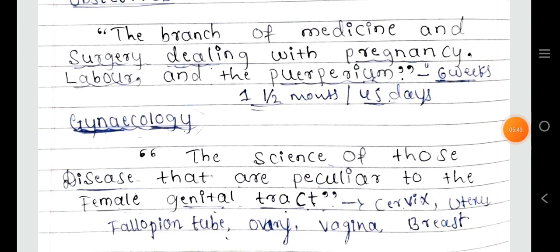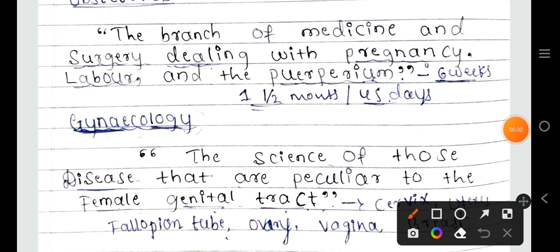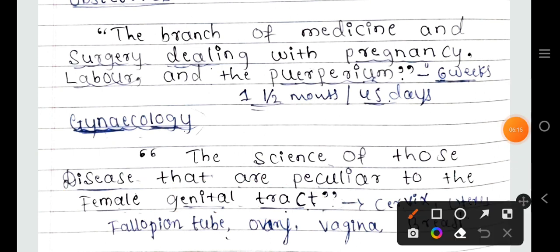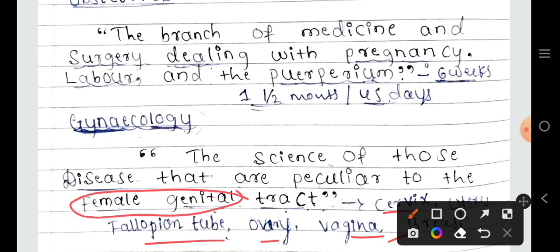Next is gynecological nursing. Gynecology is the science of those diseases that are peculiar to the female genital tract. The female genital tract includes the cervix, uterus, fallopian tubes, ovaries, vagina, and the accessory organ — the breast. Disease conditions of these organs, such as uterine inflammation, are all studied under gynecological nursing.